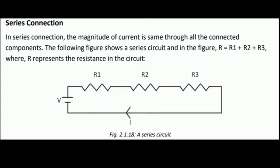In Series Connection, the magnitude of current is same through all the connected components. The following figure shows a series circuit and in the figure R equals R1 plus R2 plus R3, where R represents the resistance in the circuit.